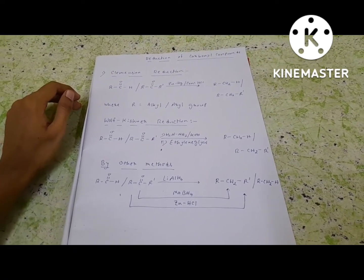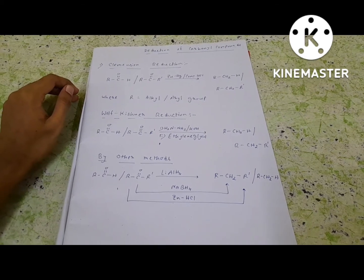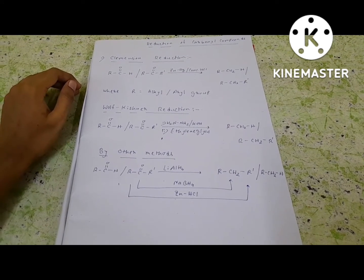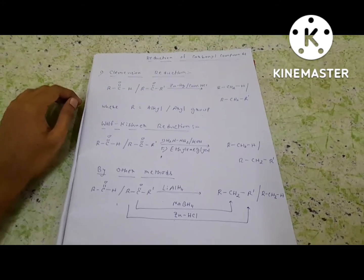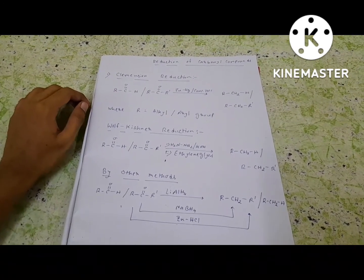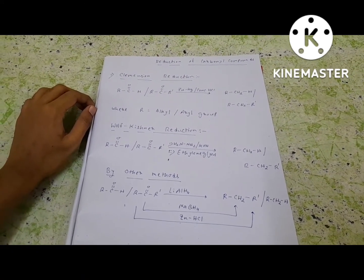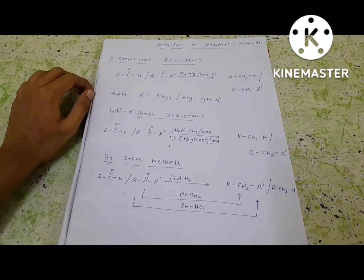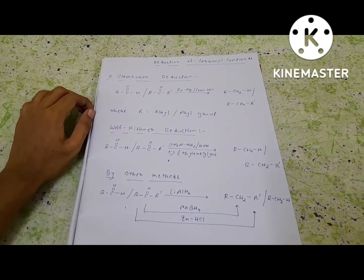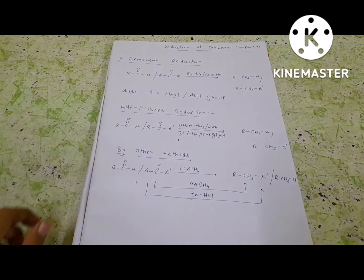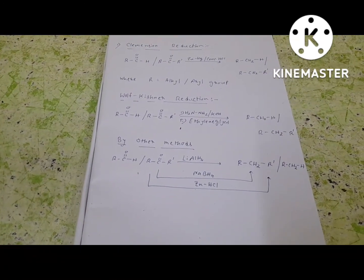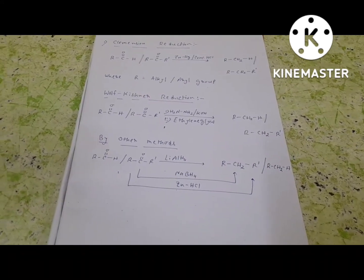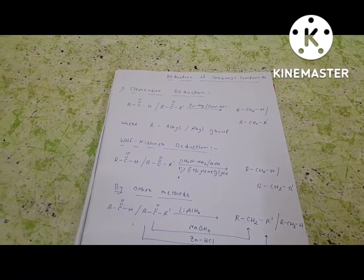All these kinds of organic compounds can be easily reduced using LiAlH₄. NaBH₄ can also reduce aldehydes and ketones, but it is not as strong a reducing agent as LiAlH₄. However, NaBH₄ can still reduce aldehydes and ketones and give an alkane as a product. Zinc/HCl also acts as a reducing agent and gives an alkane as a product.